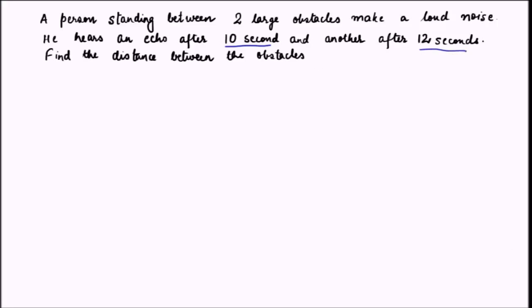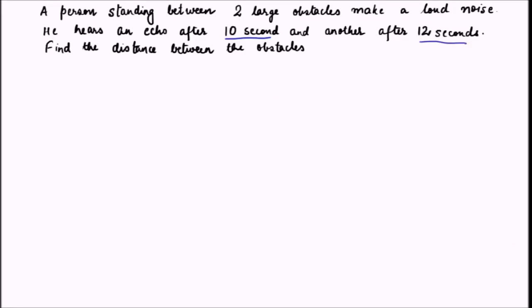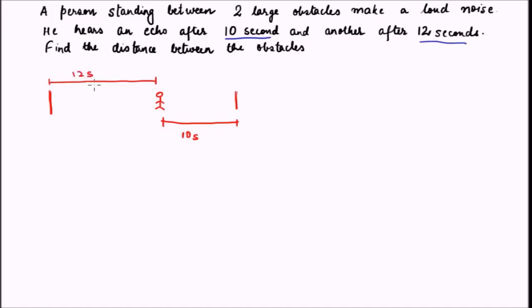We need to find the distance between the two large obstacles. Let us try to picturize the situation. Here is one obstacle and another obstacle on the other side, with the person standing somewhere in between. The echo heard earlier will obviously be from the obstacle which is closer. Let us say the closer obstacle is obstacle 1 — the echo from it takes 10 seconds — and the farther one is obstacle 2 — the echo from it takes 12 seconds.